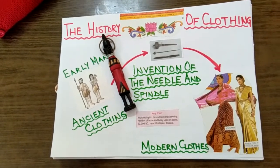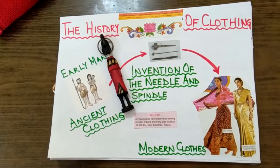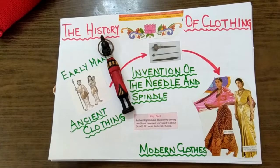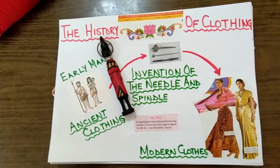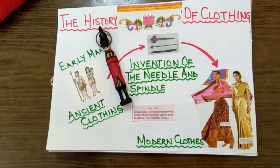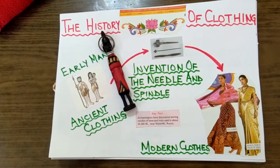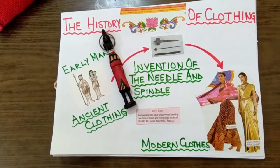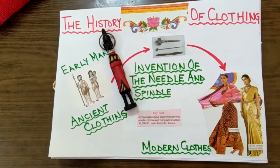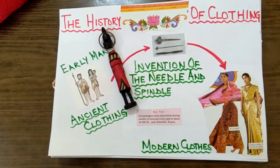Good morning, children. We are going to begin with another chapter of your science book called Fiber to Fabric, which is going to tell you very simply about the clothes we wear and from where and how we get them. First of all, I am going to tell you a story about the history of clothing. So children, relax, sit back and listen to and enjoy the story.